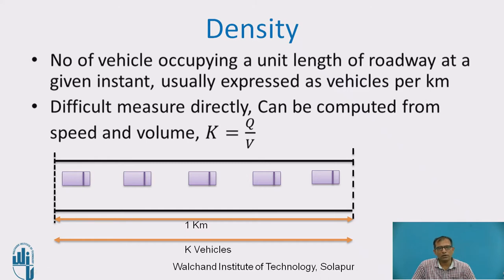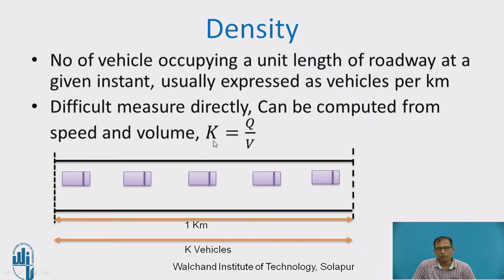Using the relationship between flow q and speed v, we can determine density as k = q / v — that is, the number of vehicles per kilometer can be calculated from the known flow and speed values.